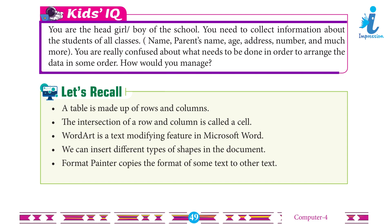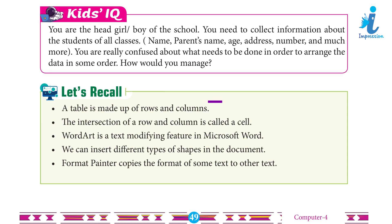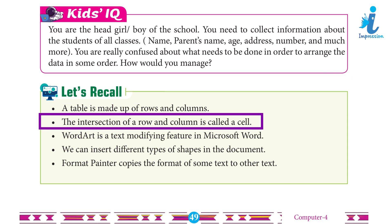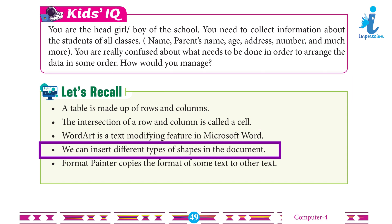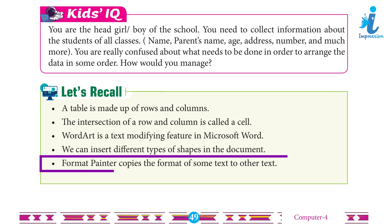Scenario: You are the head boy/girl of the school. You need to collect information about students of all classes — name, parents' name, age, address, number, and much more. You are confused about how to arrange the data in some order. How would you manage? Let's Recall: A table is made up of rows and columns. The intersection of a row and column is called a cell. WordArt is a text modifying feature in Microsoft Word. We can insert different types of shapes in a document. Format Painter copies the format of some text to other text.